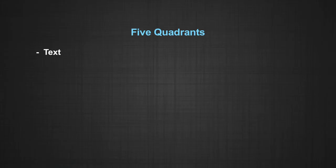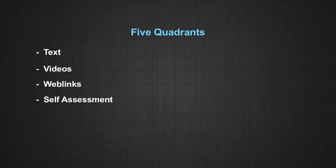Each module of the course will have five quadrants: the text, video, and babblings — which means to know more about the concept from other resources over the web — self-assessment questions that include MCQs, right/wrong, one word answers, etcetera, and transcriptions of the video.